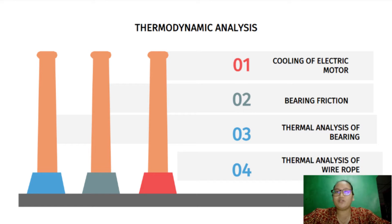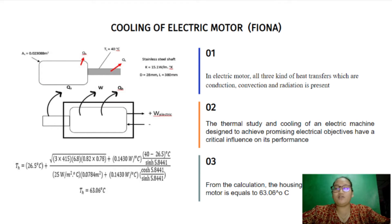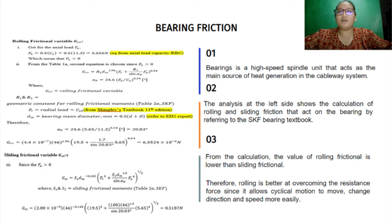For the thermodynamic analysis, this section covers the cooling of the electric motor, bearing friction thermal analysis, and thermal analysis of wire rope. All three kinds of heat transfer — conduction, convection, and radiation — are present. The control volume of the electric motor shows that the housing temperature is equal to 63.06°C. Bearing is the high-speed unit acting as the main source of heat generation in the cableway system. From the calculation, the value of rolling friction is lower than sliding friction.